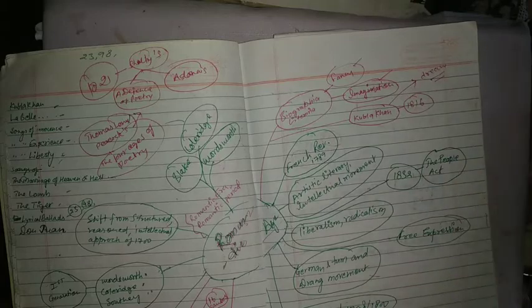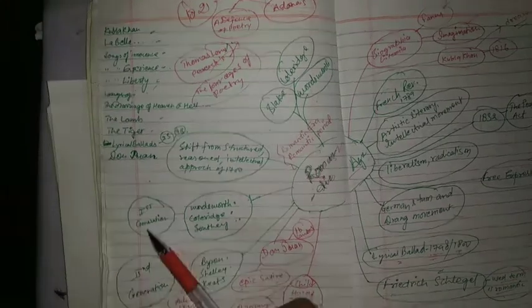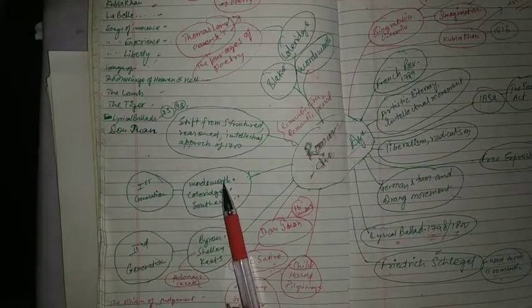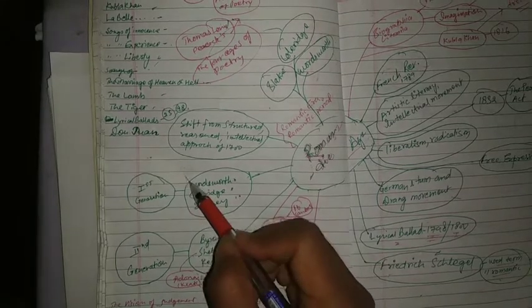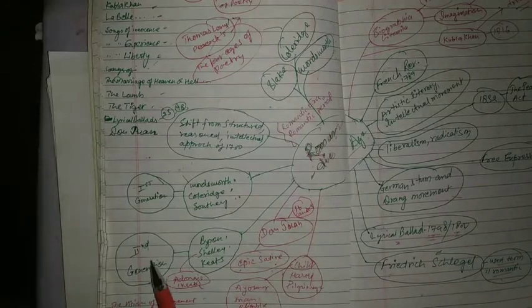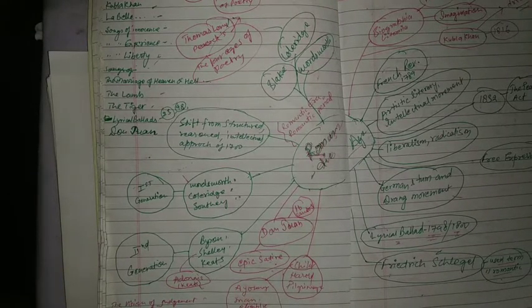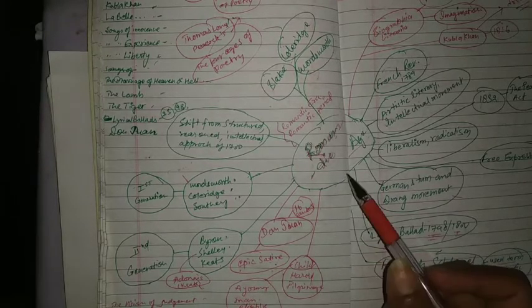Here, let's see the first generation poets and second generation poets. First generation romantics were Wordsworth, Coleridge, and Southey. You can write down their characteristics here. The second generation poets were Byron, Shelley, and Keats. Romanticism was considered best for poetry.